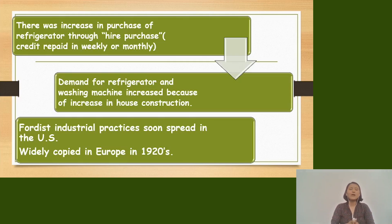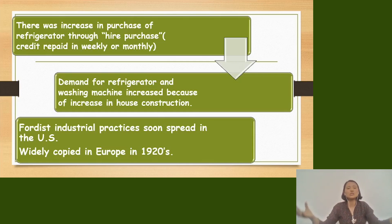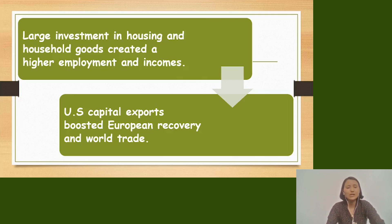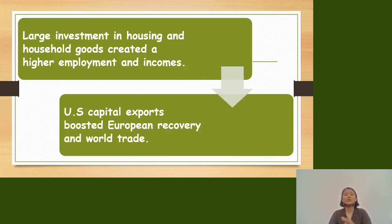This industrial practice of Ford soon spread across the US. Henry Ford's methods spread not only in the US but also in Europe in the 1920s. Large investments in housing and household goods created higher employment and income, and a large number of people started getting jobs and earning more.